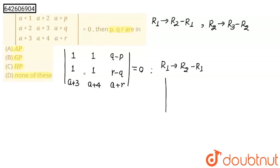So what we will get? See, 1 minus 1, this will give 0. 1 minus 1, 0. And r minus q minus this whole... So r minus q minus q plus p. So we will get r minus 2q plus p.